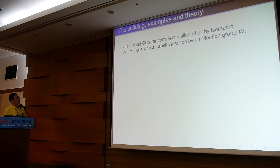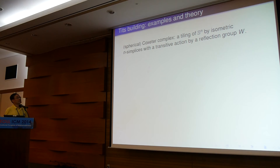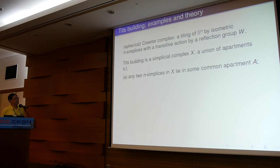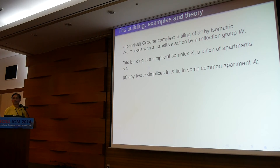Recall that a spherical Coxeter complex is roughly a tiling of a round sphere by simplices, with a transitive action by a reflection group — the so-called Coxeter group. In the specific case of a Lie group, this is exactly the Weyl group. A Tits building is a kind of simplicial complex — like simplicial topology — which can be written as a union of apartments. An apartment is a Coxeter complex, just like a tiling of a round sphere. Conditions: any two maximal simplices (chambers) lie in a common apartment, and if two chambers lie in two different apartments, you can find a simplicial isomorphism moving one to the other.